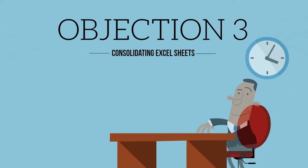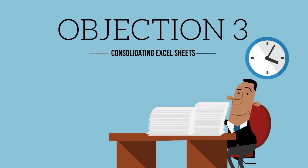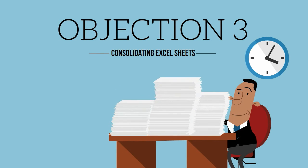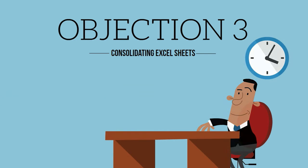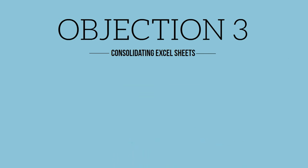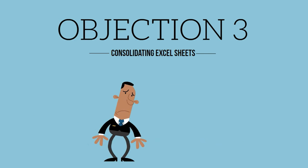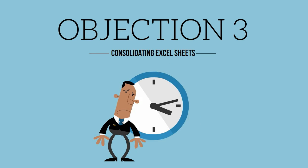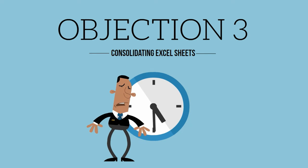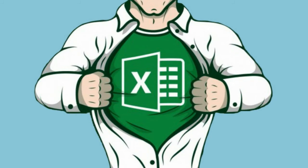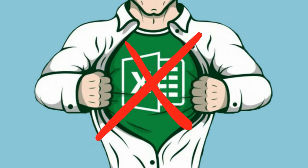Objection number 3: Consolidating all received Excel sheets. Even though you probably won't get much response, consolidating 2 or 3 Excels can already be a heck of a job. You must be a nitpick and have a lot of free time to complete the job. So for those risk managers that are no Excel superhero, this method just won't work.